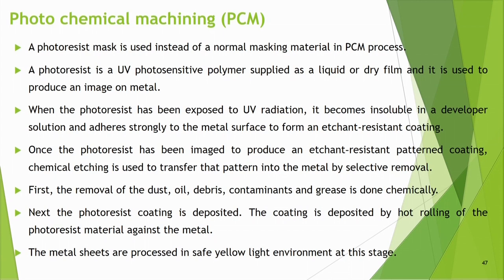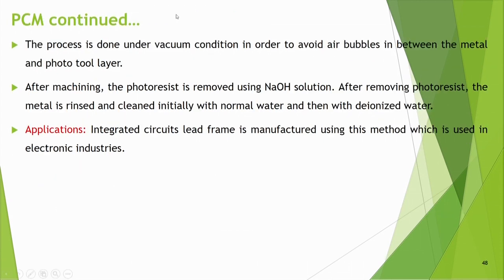In photochemical machining, the photoresist coating is deposited by hot rolling against the metal; the process is done under vacuum to avoid air bubbles between the metal and photo tool layer. After machining, the photoresist is removed using NaOH solution, and the metal is rinsed with normal water then deionized water. Applications include manufacturing integrated circuit lead frames used in the electronics industry.